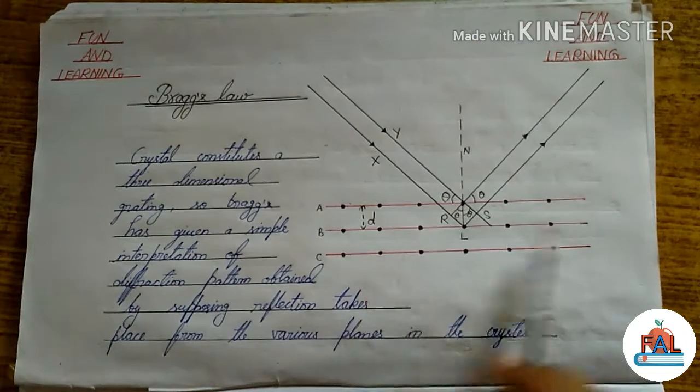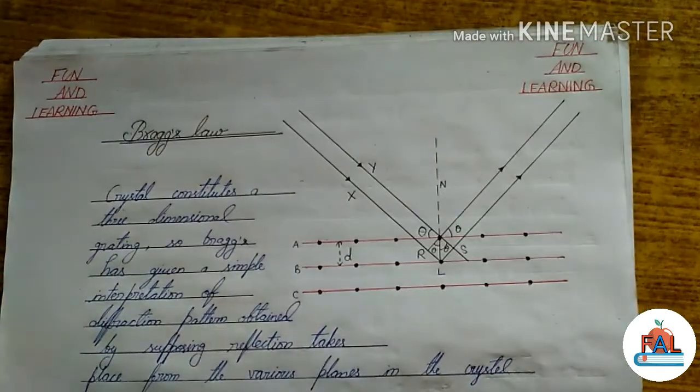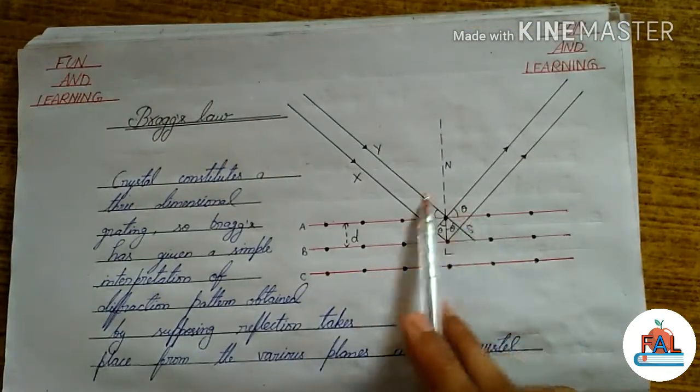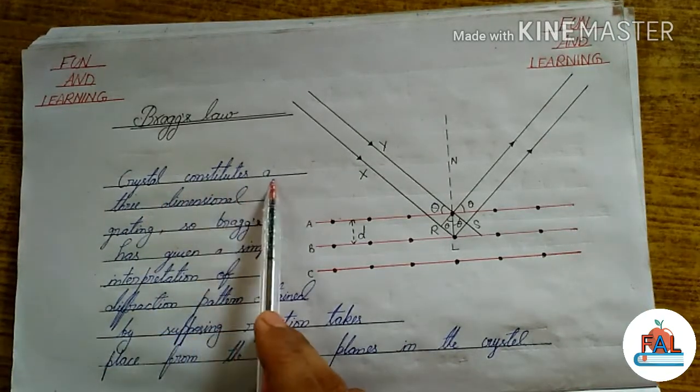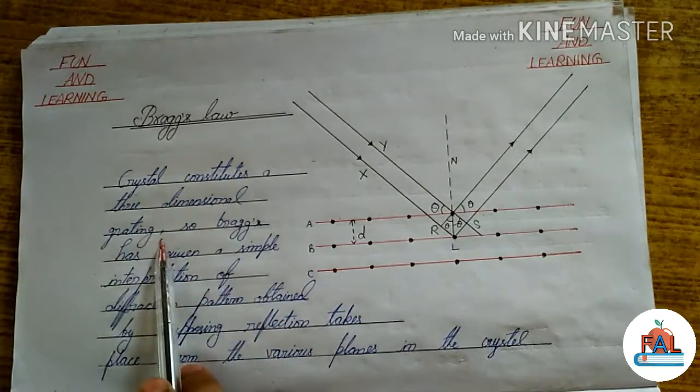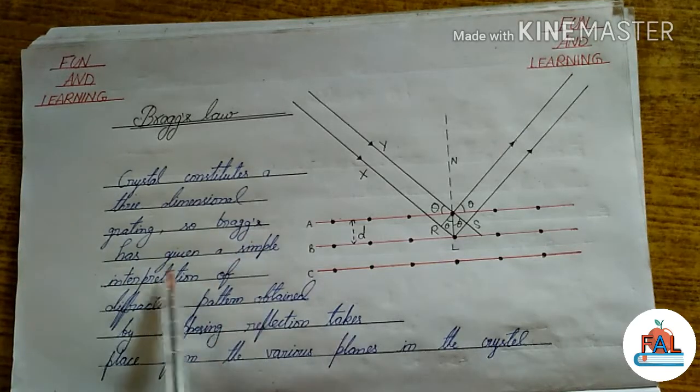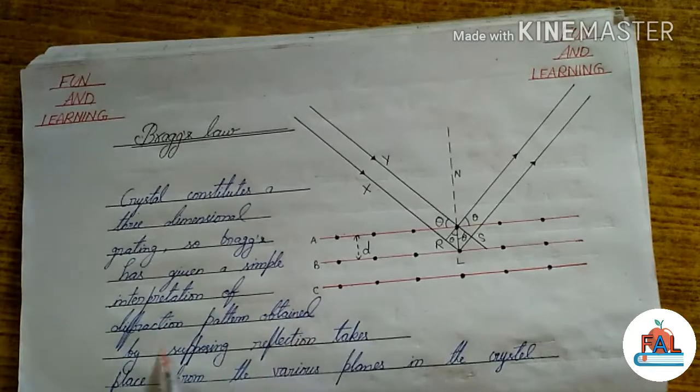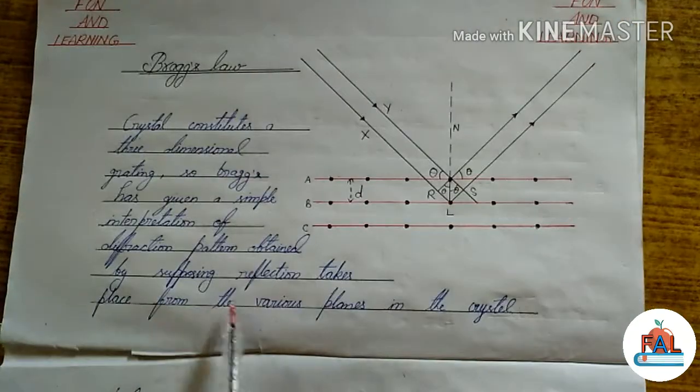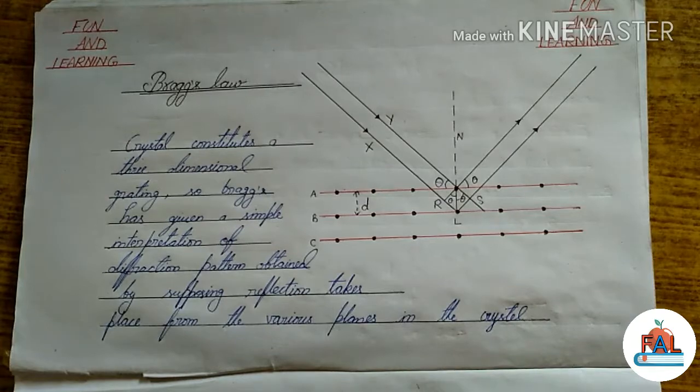This is the figure of Bragg's law. Let's understand this figure. Crystal constitutes a 3-dimensional grating, so Bragg has given a simple interpretation of diffraction pattern obtained by supposing reflection takes place from the various planes in the crystal.